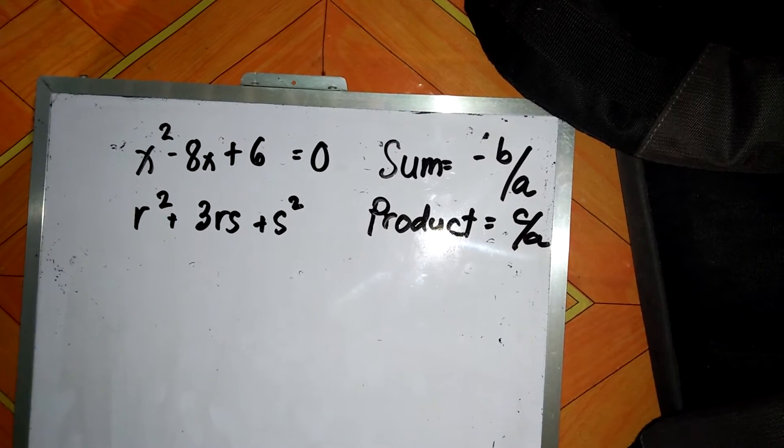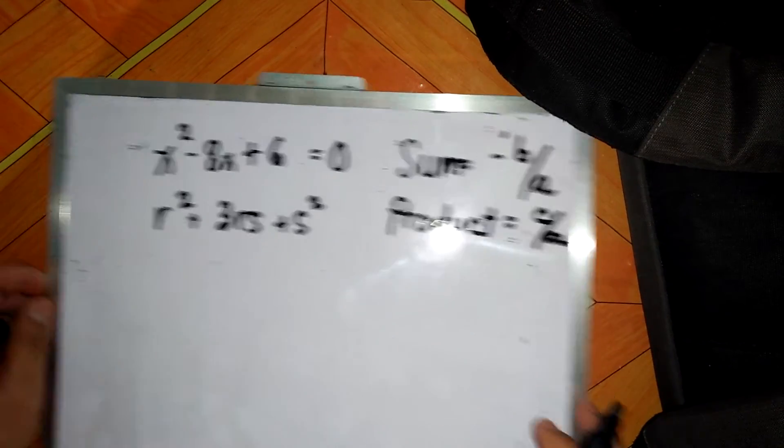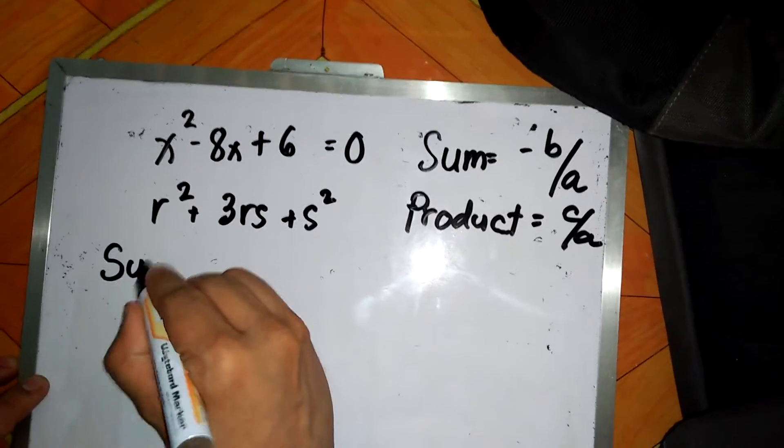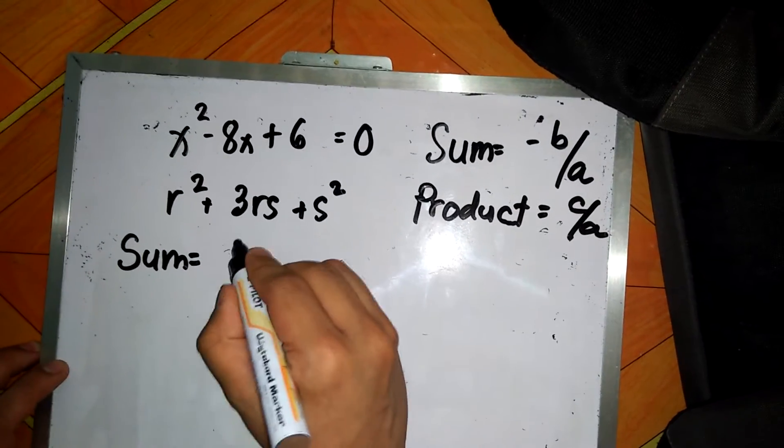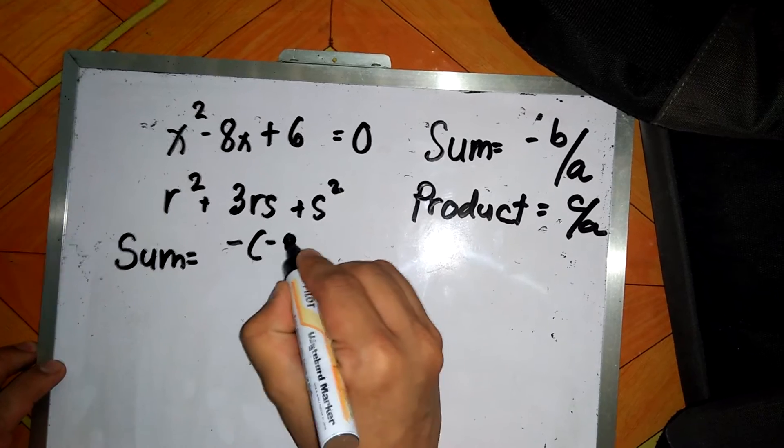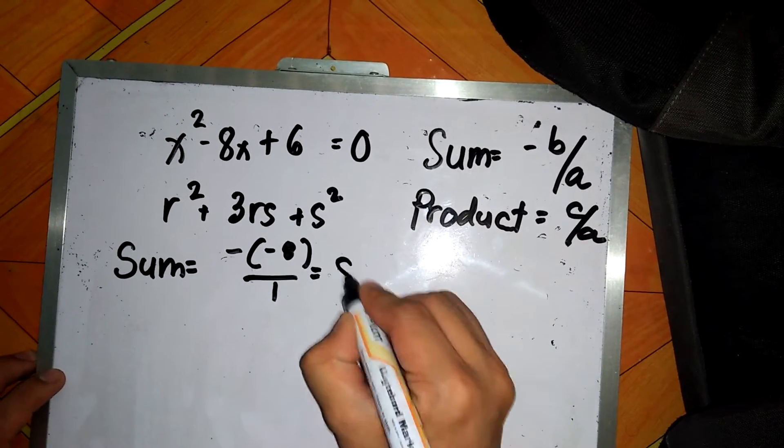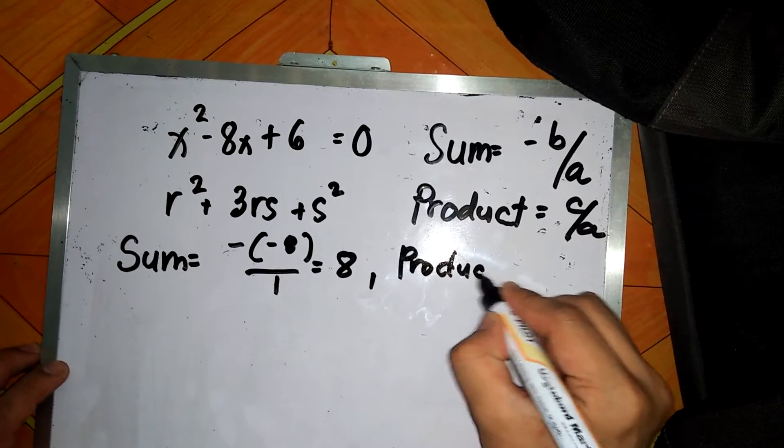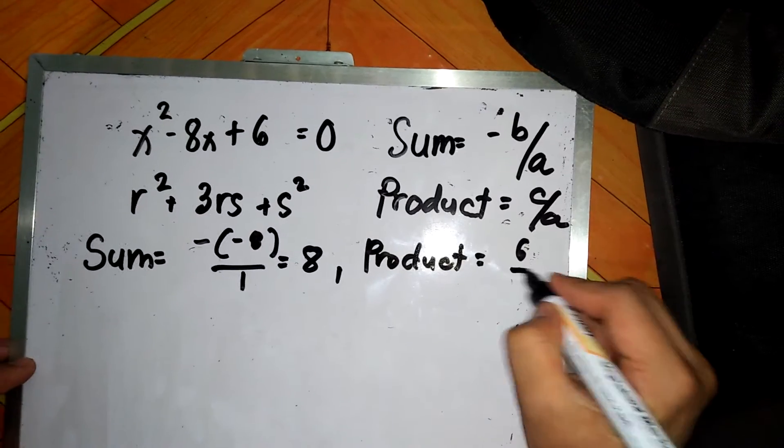Okay, so after that, we can then solve for the sum of this equation. So the sum is equal to negative of negative 8 over 1, so this is positive 8. For our product we have c which is 6 over 1, or equal to 6.